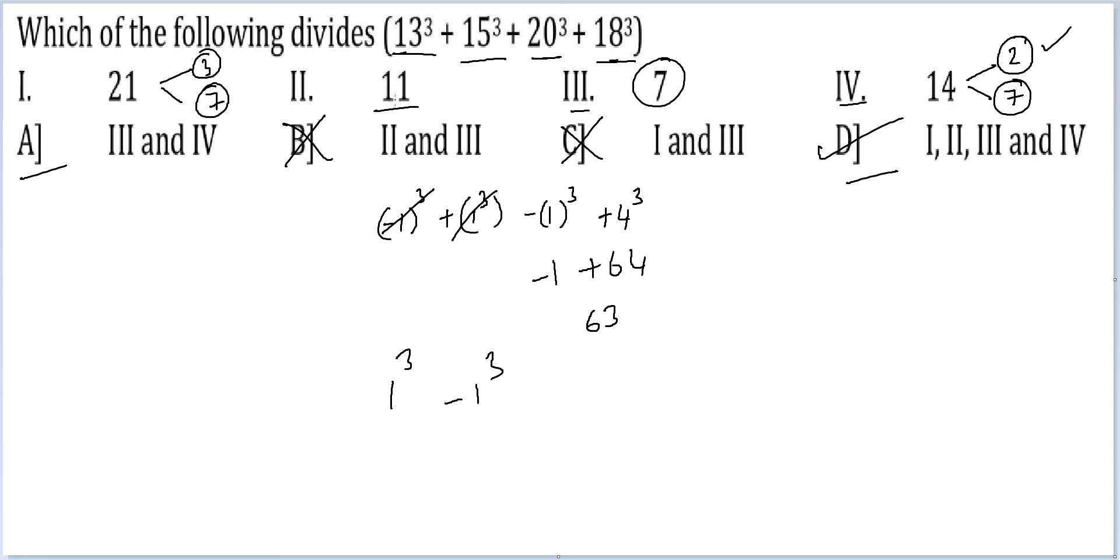If you're insistent on checking for 11, let's also do that. 13 is leaving a remainder of 2³ with 11. 15 leaves a remainder of 4³. 20 leaves a remainder of -2³, and 18 leaves a remainder of -4³. Everything will get cancelled out. Still, you will reach your answer option D. That is it.